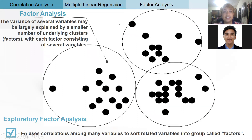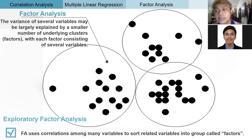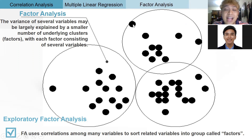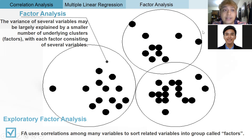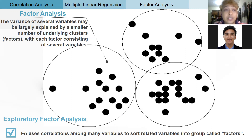Now we talk about factor analysis — the third concept before we get to structural equation modeling. Factor analysis tries to group certain factors based on their Euclidean distance. For example, you can group variables like hand size, body dimensions, and leg size into one factor, perhaps called anthropometrics. Factor analysis is different from cluster analysis: cluster analysis clusters people, while factor analysis groups or reduces factors.